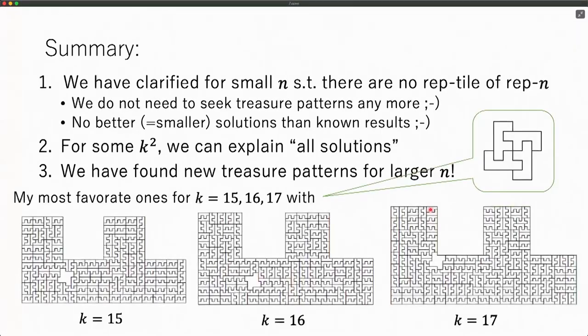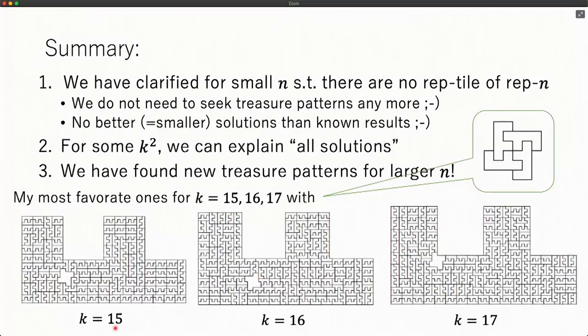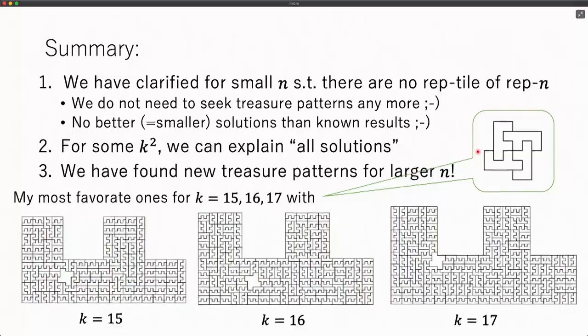My most favorite ones are like this. For the F pattern, you can find such reptiles. For example, in this case k is 15, which means you have to divide into 225 pieces, and you can assemble them in this pattern. The very key feature is that this pattern contains this hole, which can be filled by this very special pattern. This is a totally new pattern of this series of new reptiles.